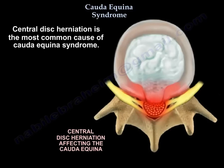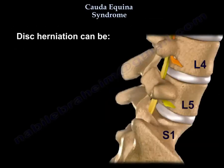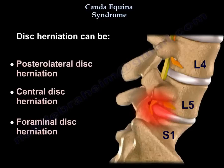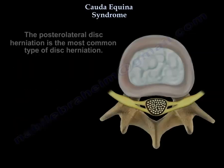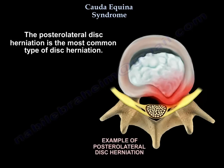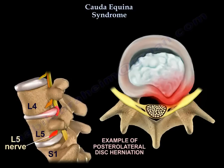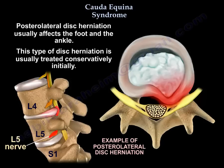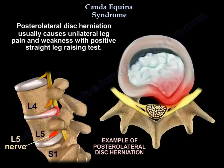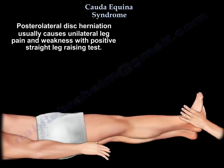Central disc herniation is the most common cause of Cauda Equina syndrome. Disc herniation can be posterolateral, central, or foraminal. Posterolateral disc herniation is the most common disc herniation overall. There will be a nerve root injury, changes in sensory distribution, and there could also be motor and reflex changes. It usually affects the foot and ankle and is usually treated conservatively initially.